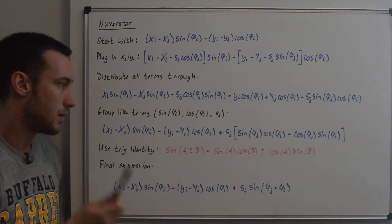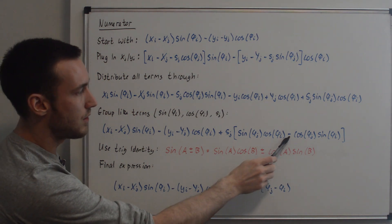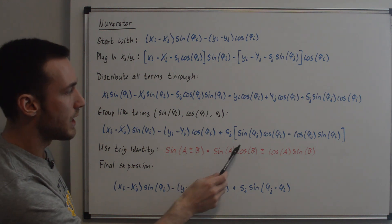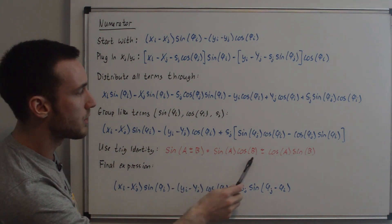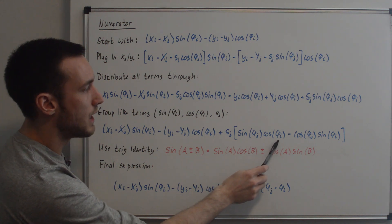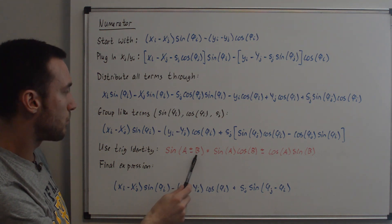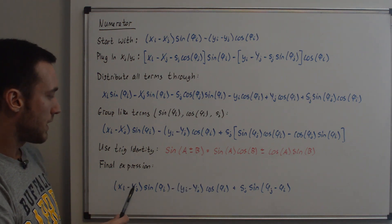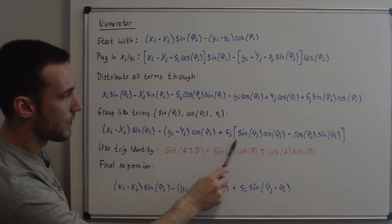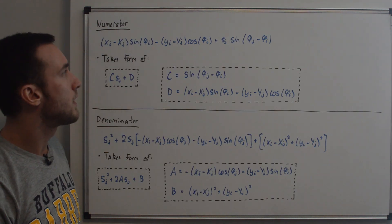We apply the trig identity sin(a ± b) = sin(a)·cos(b) ± cos(a)·sin(b). Since we have a minus sign, we use the subtraction form. With a = phi_j and b = phi_i, the s_j term becomes s_j·sin(phi_j minus phi_i). So the numerator takes the form c·s_j + d, where d = x_i·sin(phi_i) minus y_i·cos(phi_i) minus X_j·sin(phi_i) plus Y_j·cos(phi_i), and c = sin(phi_j minus phi_i).